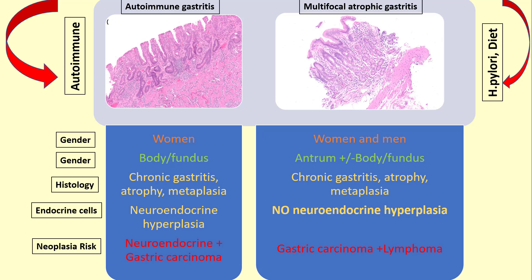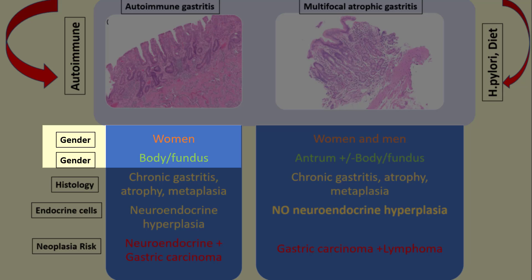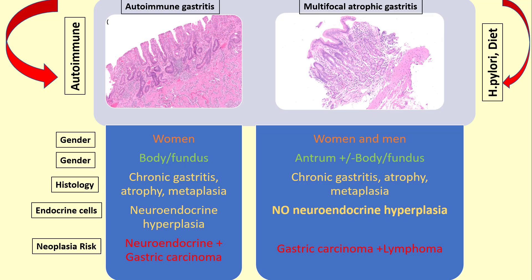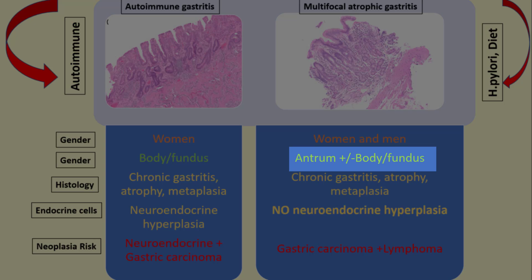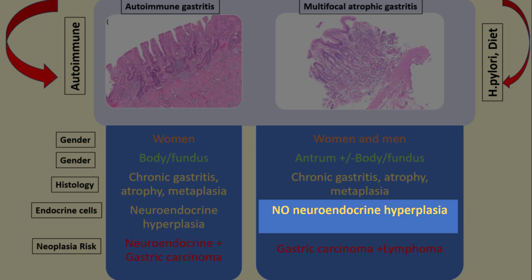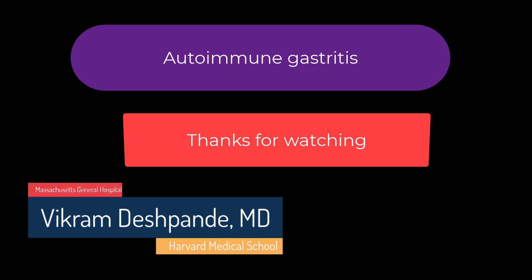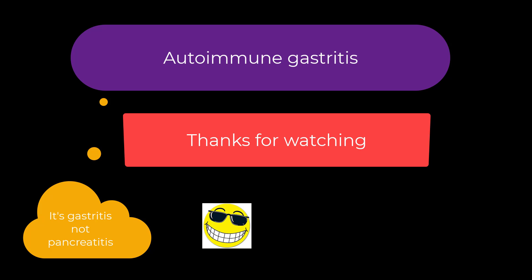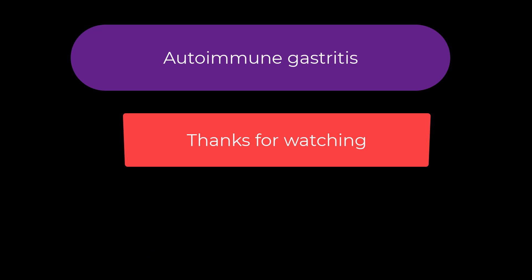Here's a quick summary comparing autoimmune gastritis with multifocal atrophic gastritis. Autoimmune gastritis is mostly a disease of women. You characteristically see neuroendocrine cell hyperplasia in the body and fundic mucosa. Multifocal atrophic gastritis is predominantly a disease of the antrum — you do not see neuroendocrine cell hyperplasia in the body and fundic mucosa.